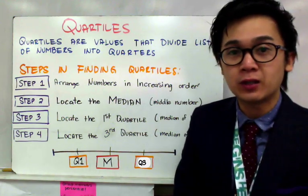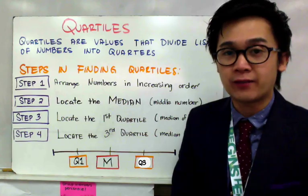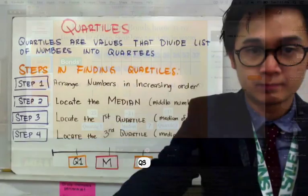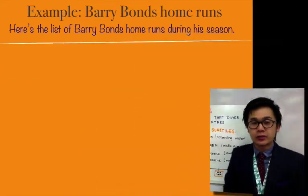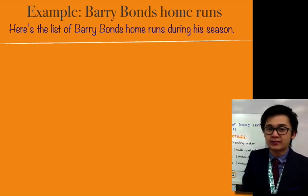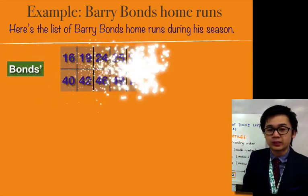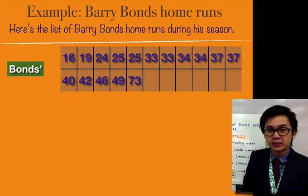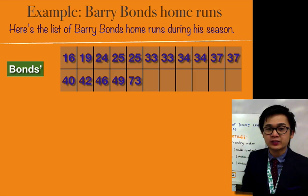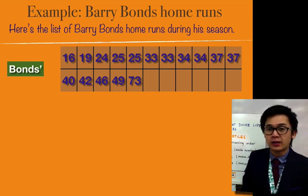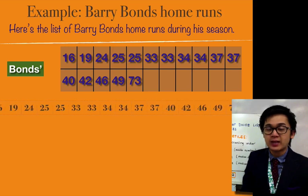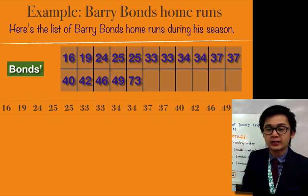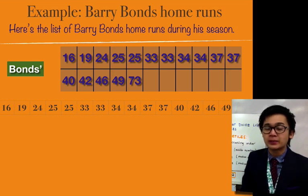Let's have an example on how to construct our quartiles from a given list of values. In this example, we have Barry Bonds' home run hits. The list of Barry Bonds' home run hits during a season includes values from 16 and 19 up until 73. The first step is to arrange Barry Bonds' home run hits from least to greatest: 16, 19, 24, 25, up until 73.